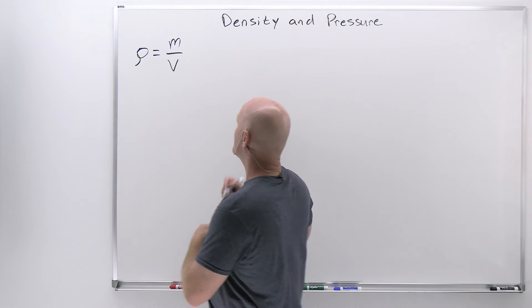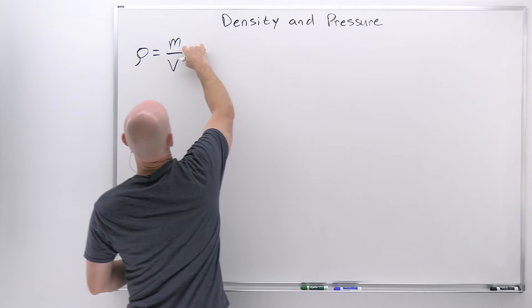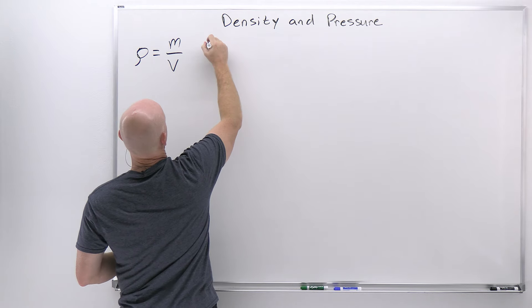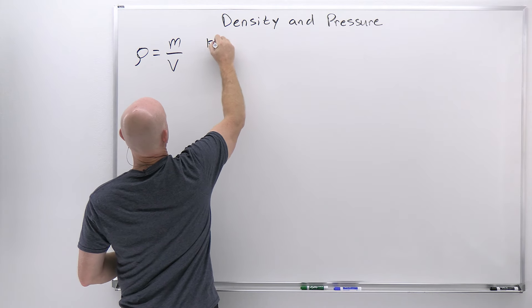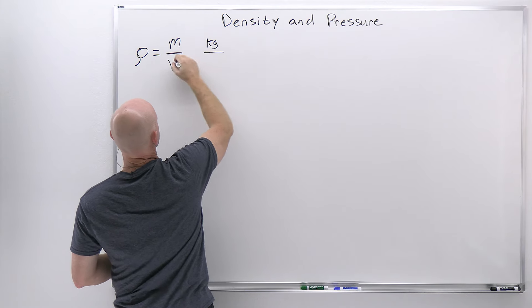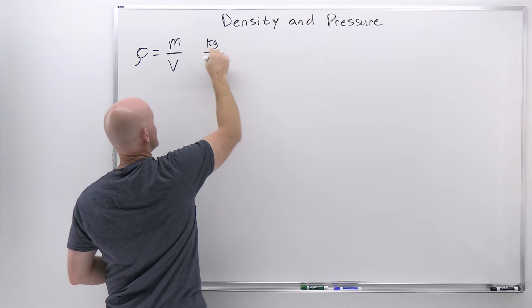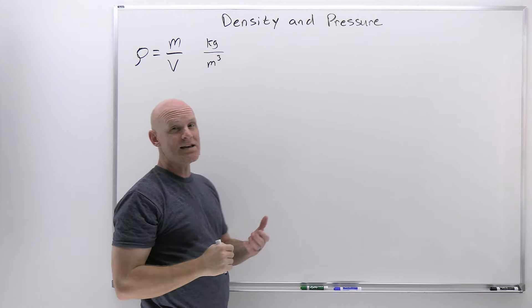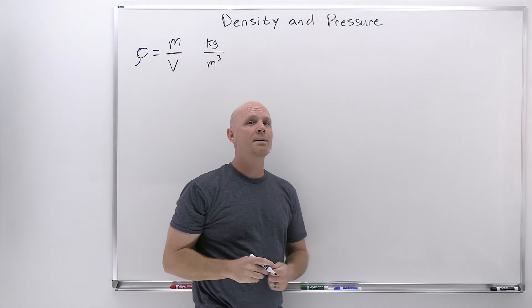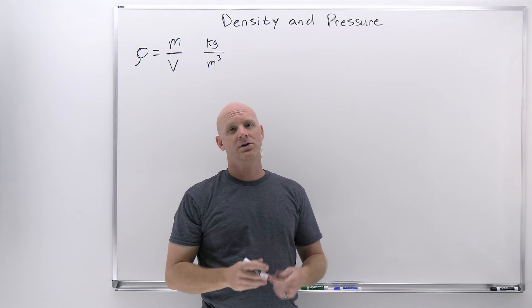Looking at the SI units: the SI unit for mass is the kilogram, for volume is the meter cubed, and the SI unit for density is the kilogram per meter cubed.